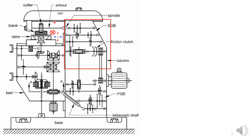In a lathe, along with the speed gearbox you have a feed gearbox so that you can get different feeds. In a lathe you get two kinds of feeds: one along the longitudinal feed direction and another one along the cross feed direction. And just now we have talked that you can get vertical feed, transverse or cross feed, and longitudinal feed — and all of them are achieved through this particular feed gearbox.